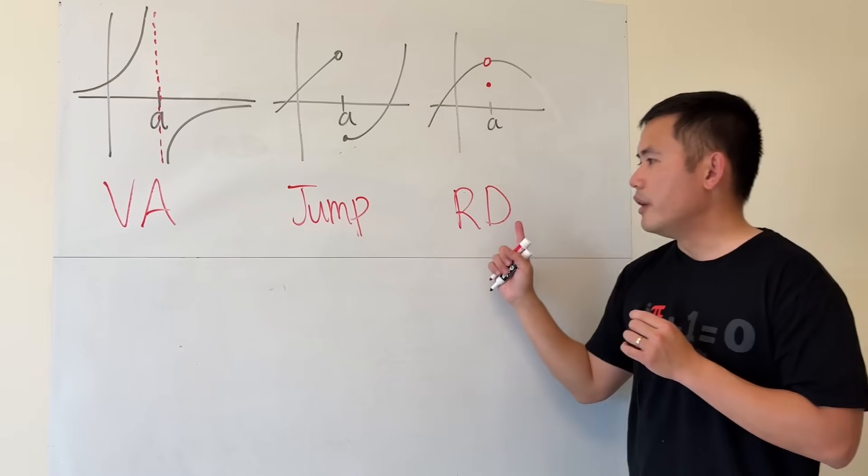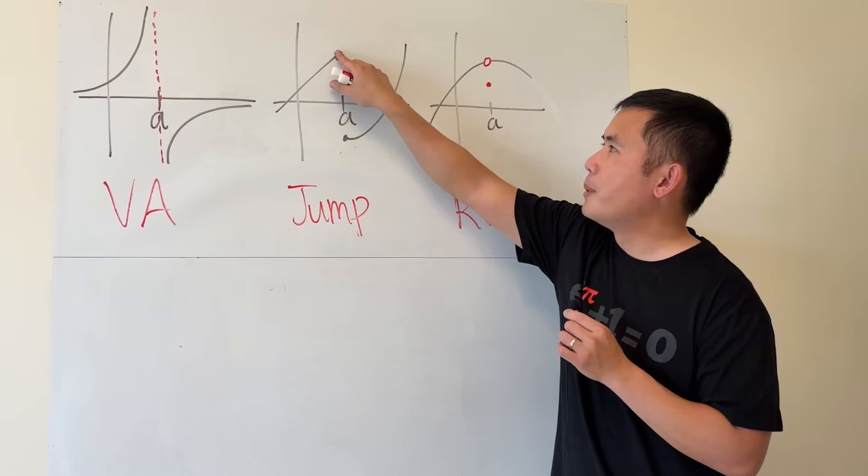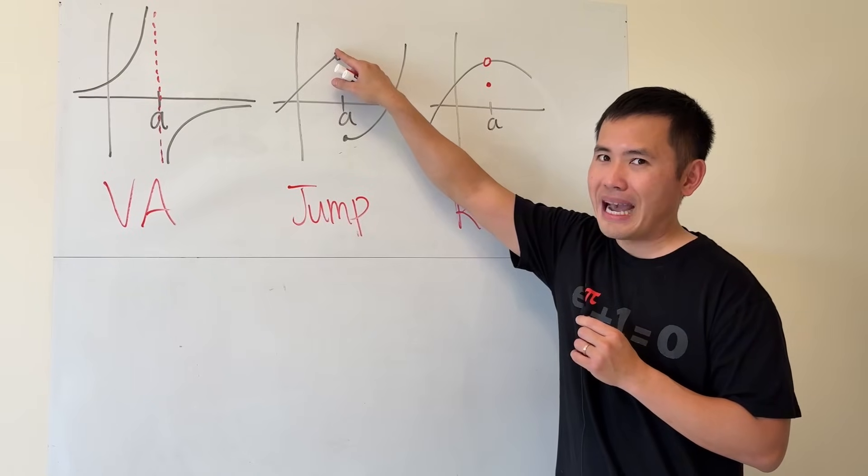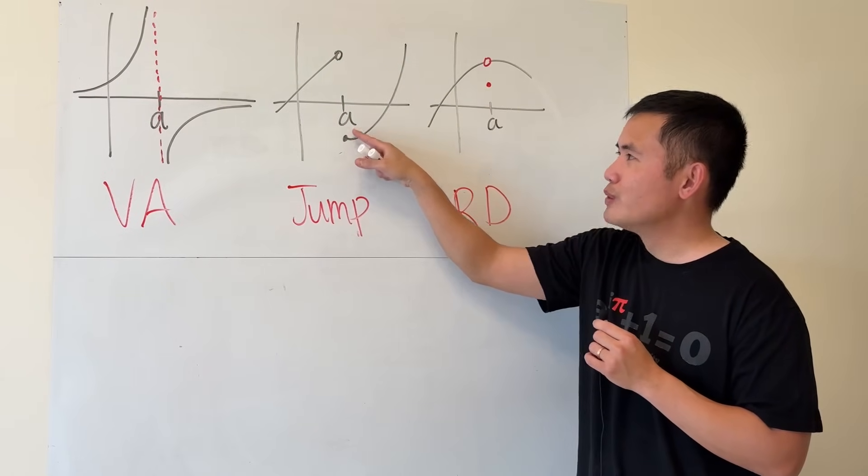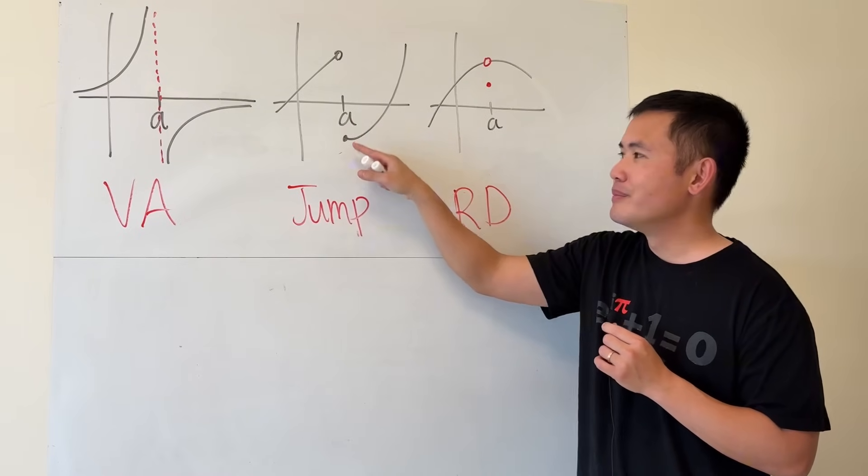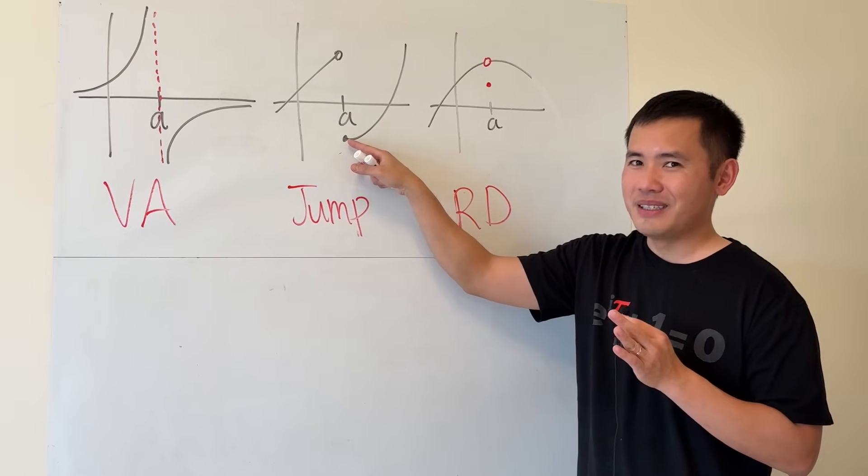The difference between an RD and a jump is that, right here, even though we have an open circle, but if you fill in the open circle, first, that would be really bad, because you cannot have two different y values at one x value. I defined the closed circle to be here already, but that's not the issue.